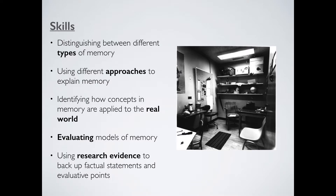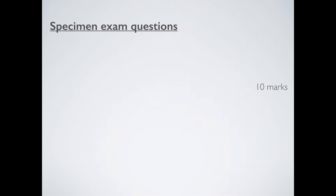Finally, we should be able to use research evidence to back up factual statements and evaluative points. So if we're saying something about Loftus and Palmer, we can note that Yuille and Cutshall point out something completely different — this is how we back up our statements and evaluation. Now let's look at some specimen exam questions. Because this is our optional topic, the actual questions will be very vague and very general. This is good because you can write about pretty much anything, but also bad because you don't really know how much to cover or what detail to go into.